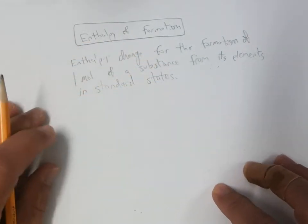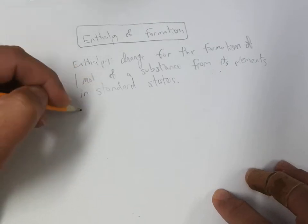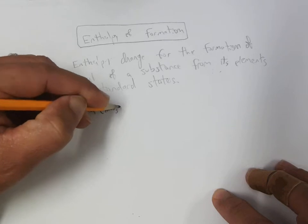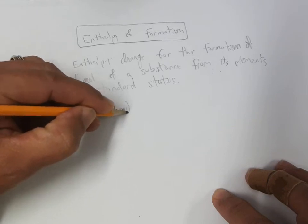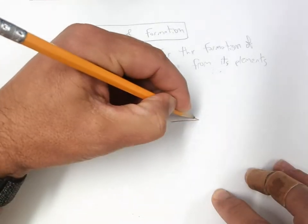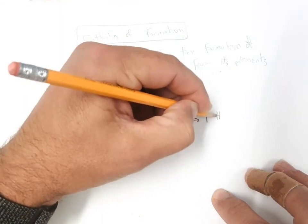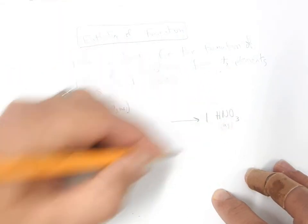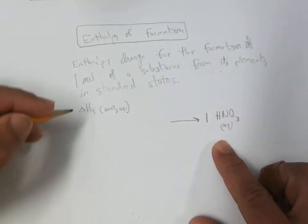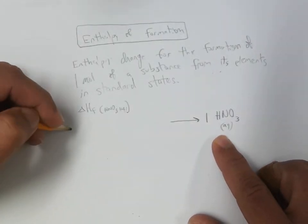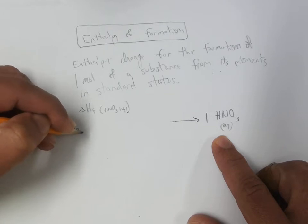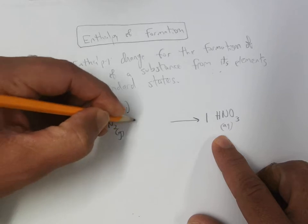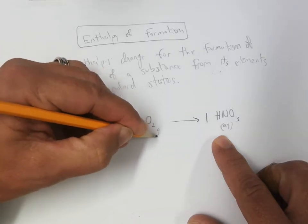For instance, if you wanted to understand the enthalpy of formation of nitric acid, what you would have to do is form one mole of nitric acid from its elements in their most stable states. So hydrogen is H2 gas, nitrogen is N2 gas, and oxygen is O2 gas.